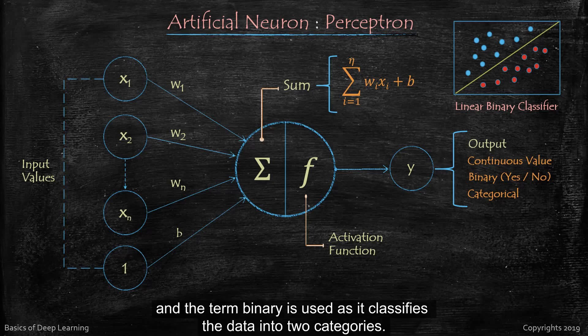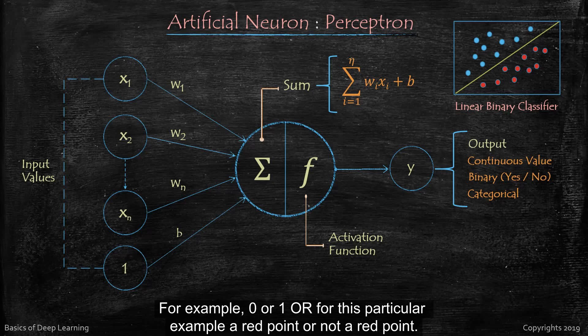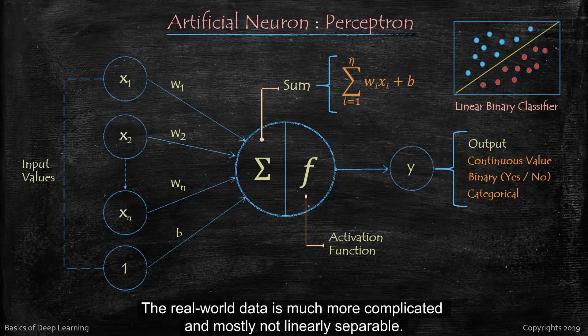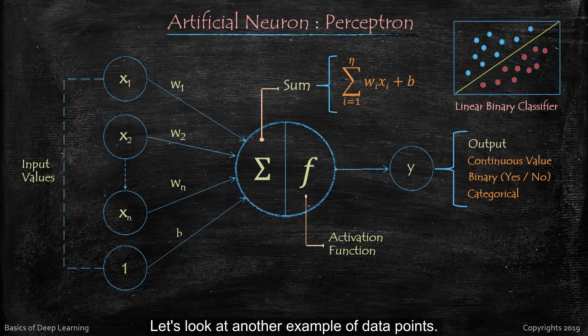And the term binary is used as it classifies the data into two categories, for example zero or one, or for this particular example a red point or not a red point. But in the real-world scenario this is not the case. The real-world data is much more complicated and mostly not linearly separable.